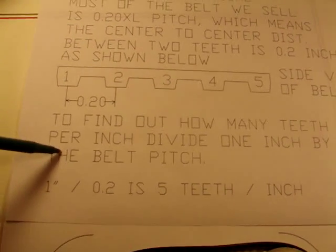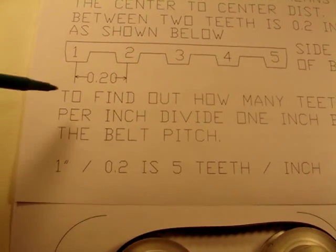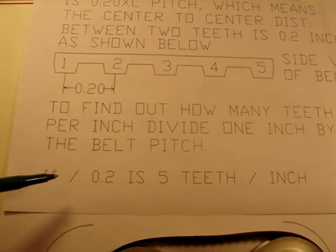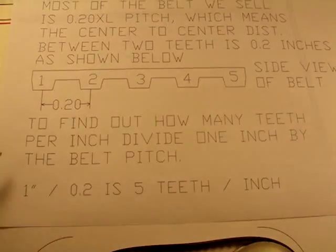To find out how many teeth there are per inch, you need to take and divide an inch by the .2. So in this case it shows us that there's 5 teeth per inch for this particular kind of belt.